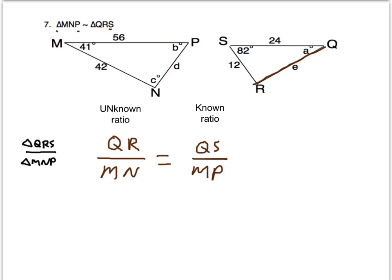So QR again is unknown. It's E units. MN is known, that's 42, and that's equal to QS, which is 24.